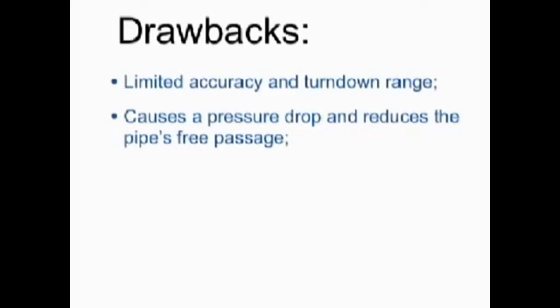Ultimately, accuracy and turndown are related to pressure drop. In other words, the more accuracy and range you need, the greater pressure drop you'll have to tolerate. The orifice is prone to wear. While there are no moving parts, the orifice itself is often a wear-prone point due to the high liquid velocity. If the orifice gradually enlarges with wear, the flow measurement will read low.